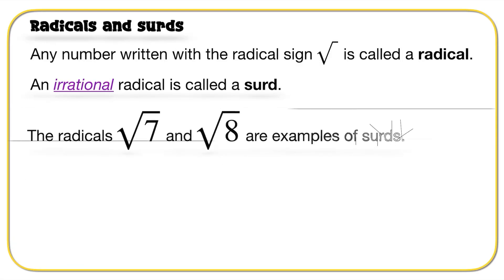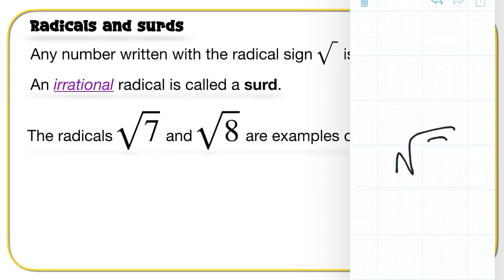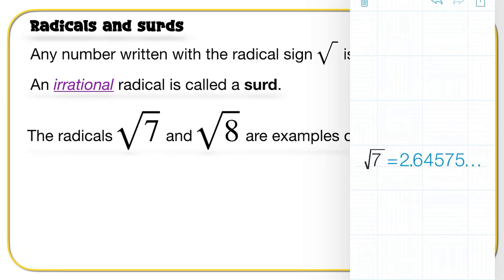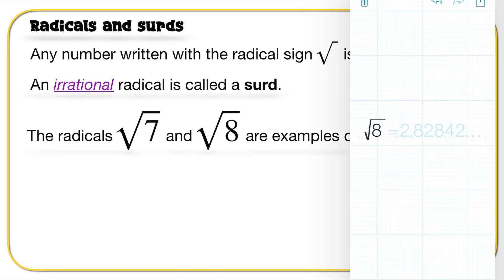Look at this: the radicals √7 and √8 are examples of surds. Why do you think that is? The root of 7 is equal to 2.6457 and it carries on. The root of 8 is equal to 2.82842 and it carries on — we've truncated the value, but it carries on.